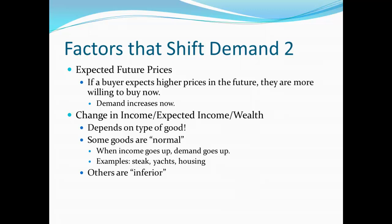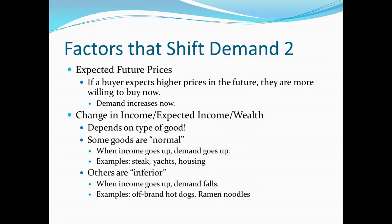Other goods we classify as inferior goods. Inferior doesn't necessarily mean lower quality — it just means that when income goes up, demand for these goods tends to fall, and you switch away from them. I use the Bill Gates test: if Bill Gates buys more of something than I do, it's probably a normal good; if he'd likely buy less, it's probably an inferior good. Examples of inferior goods include off-brand hot dogs and ramen noodles — as your income goes up, you tend to switch away from these.